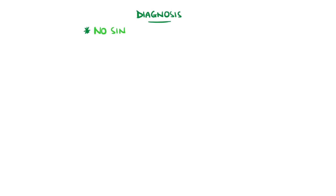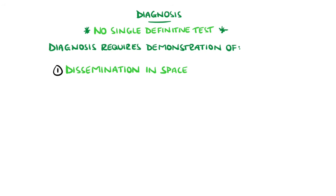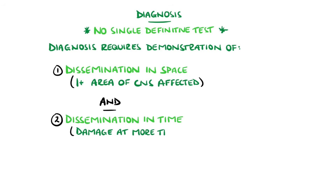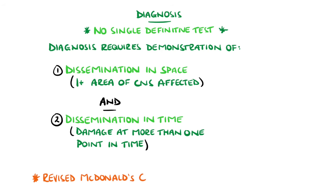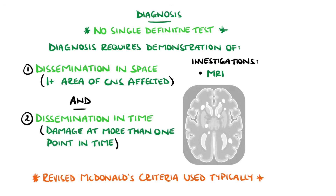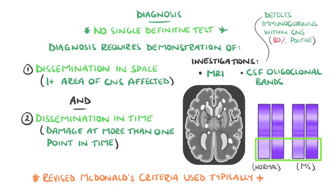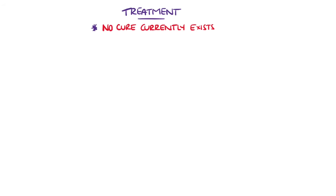No single test is definitive for multiple sclerosis and it can be difficult to diagnose, especially early on. For a diagnosis, there must be dissemination in space — evidence of more than one area of the CNS having been damaged — and dissemination in time — meaning the damage has occurred at different points in time. The revised McDonald criteria are the most commonly used tool to demonstrate this, and include MRI findings and cerebrospinal fluid oligoclonal banding, a test looking for immunoglobulins within the CNS indicating inflammation, which is 80% positive in multiple sclerosis.